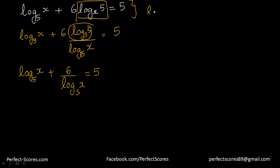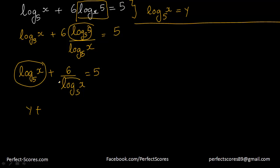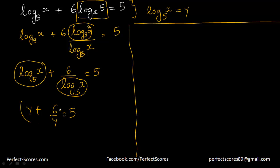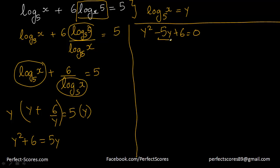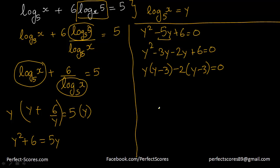Let me set y equal to log of x to the base 5. Then we have y plus 6 over y equals 5. Multiplying through by y gives y squared plus 6 equals 5y, so y squared minus 5y plus 6 equals 0. Splitting the middle term: y squared minus 3y minus 2y plus 6 equals 0, which factors as y minus 3 times y minus 2 equals 0.